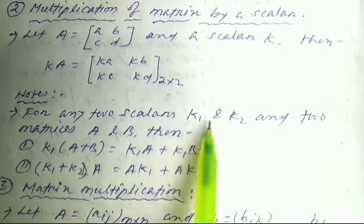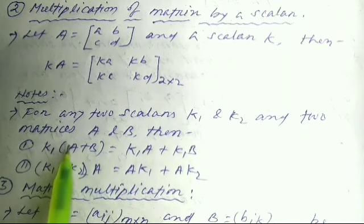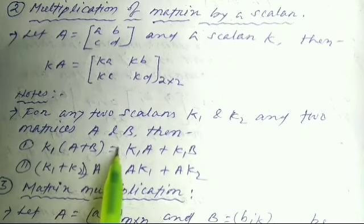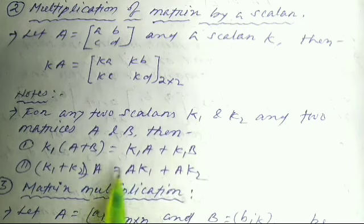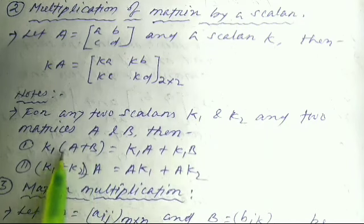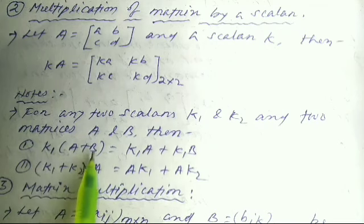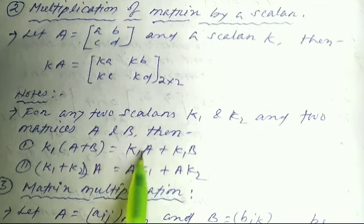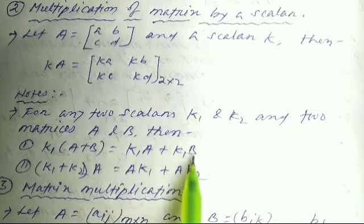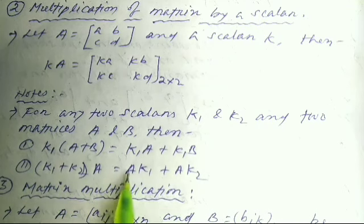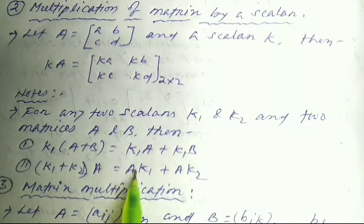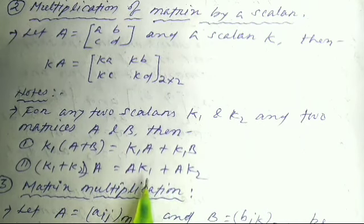Important note: For any two scalars k1, k2 and two matrices A and B, k1·(A + B) = k1·A + k1·B, and (k1 + k2)·A = k1·A + k2·A. So when two matrices are multiplied by a scalar, the scalar distributes over addition, and two scalars added together and multiplied by a matrix distribute accordingly.